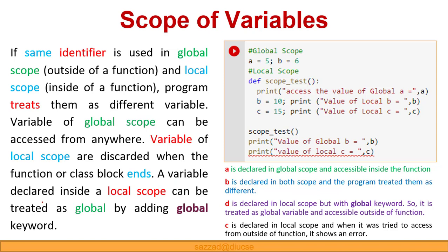A variable declared inside a local scope can be treated as a global by adding the 'global' keyword. So if we want to make a variable 'c' global, before using 'c' inside the function we just need to write 'global c', and then it will become a global variable.